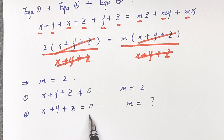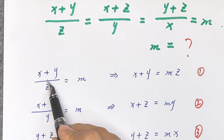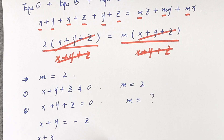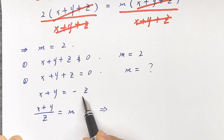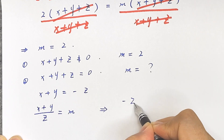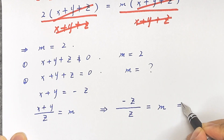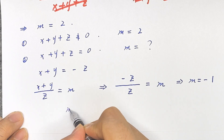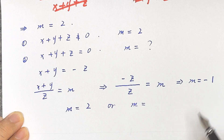If x plus y plus z equals 0, then x plus y equals negative z. Substituting into (x plus y) over z equals m gives us negative z over z, which equals negative 1. So m equals negative 1.